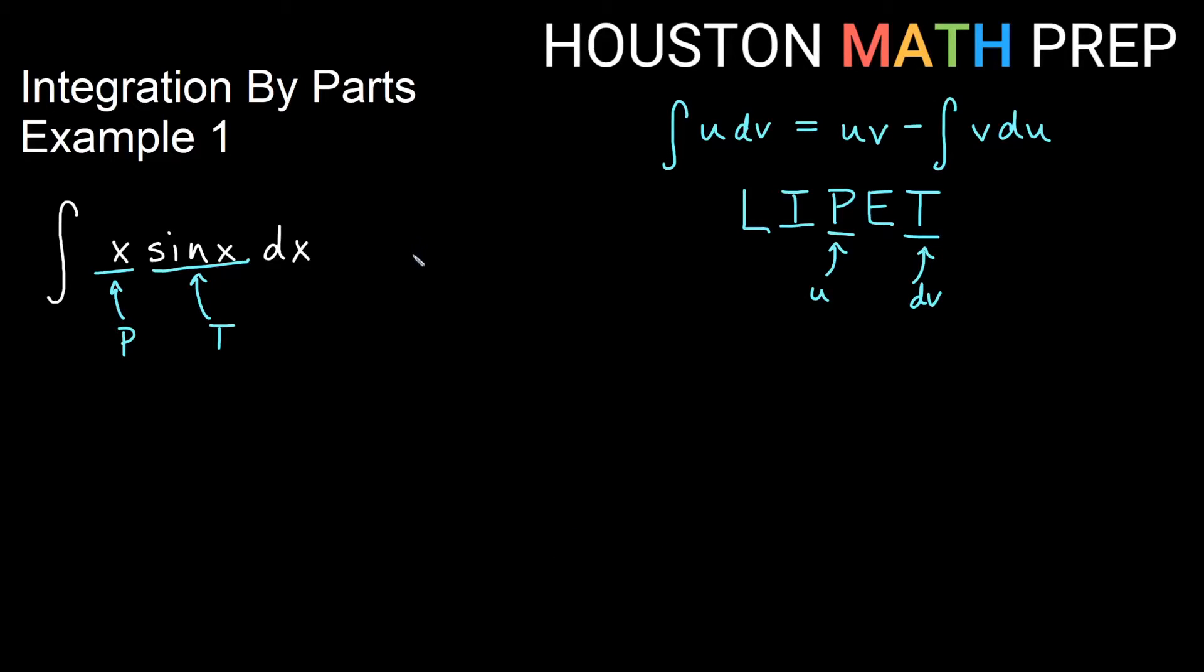Okay, so if we go ahead and write down what everything is going to be, our u is going to be x. In this case our dv is going to be sin x dx. Remember that dx always goes with dv to start.